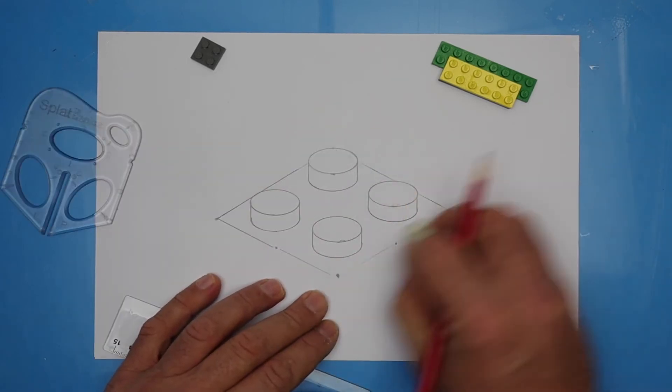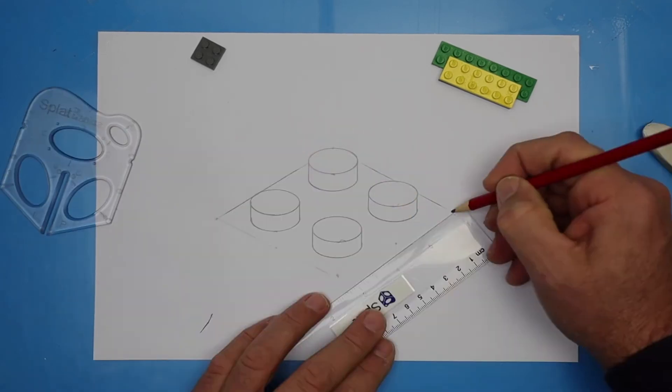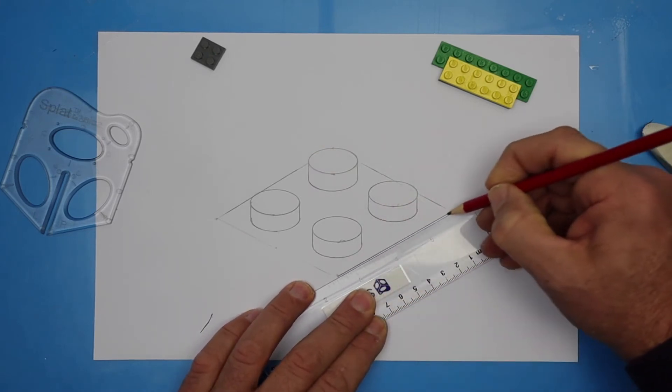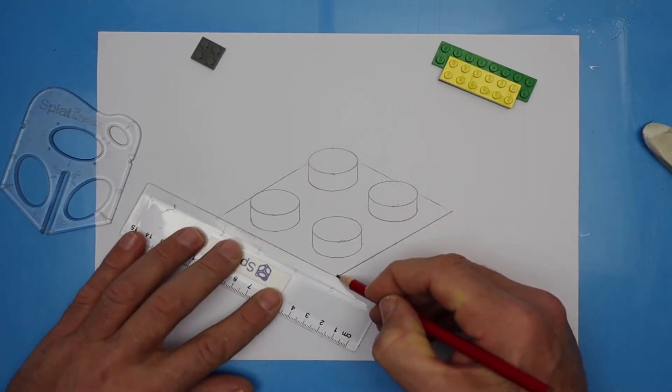And at the front, if yours is a little bit wonky the first time, then feel free to erase those and then firm those in. Firm in means to make them darker.